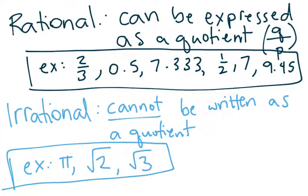In the set of real numbers, we have rational numbers and we have irrational numbers. A rational number can be expressed as a quotient, some number divided by another number as q over p.